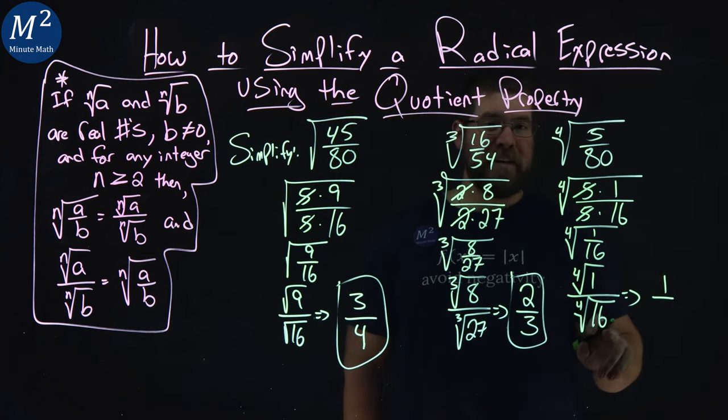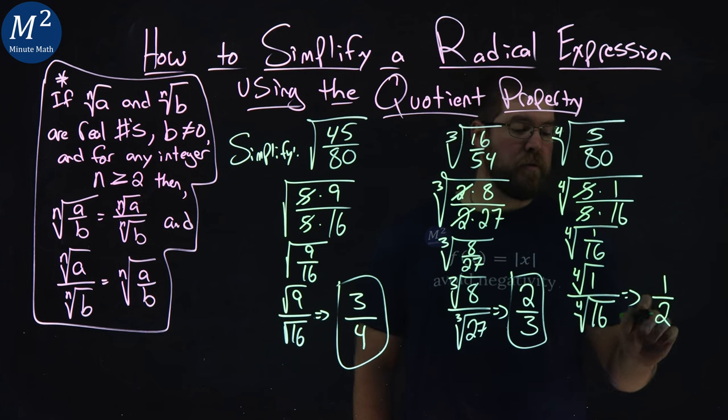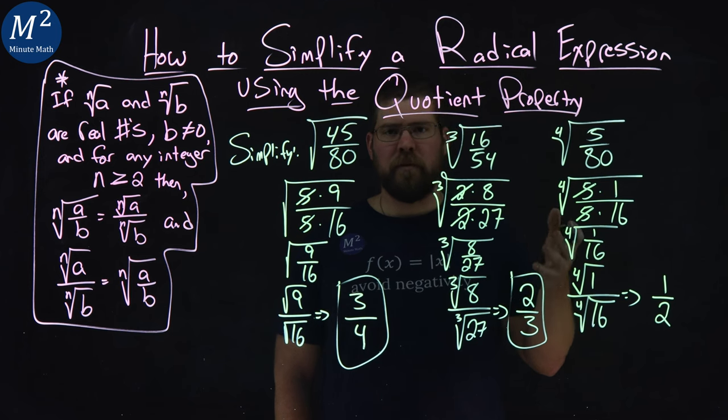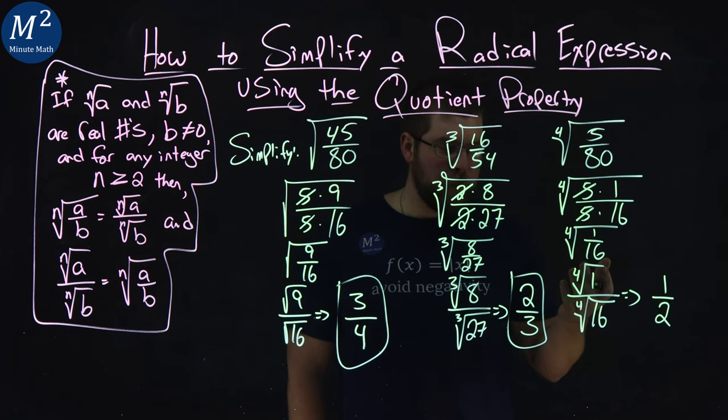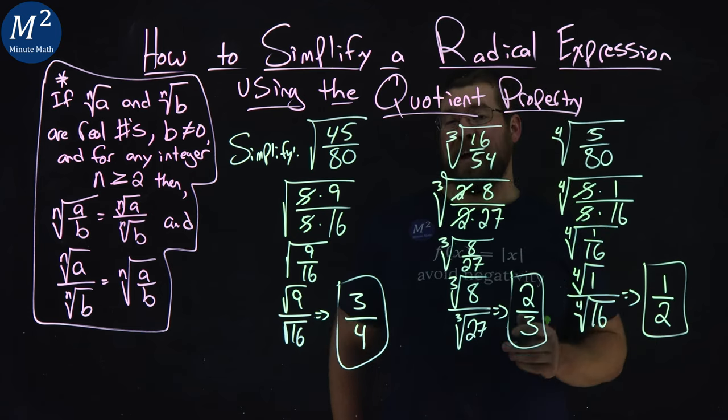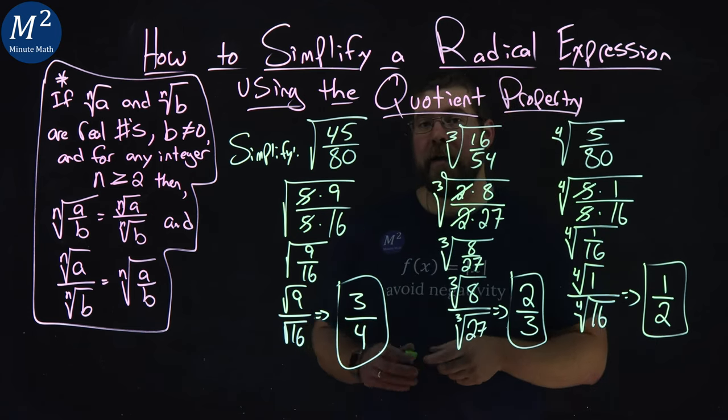And don't forget the fourth root of 1 is always going to be 1. Fourth root of 16 is actually 2. A lot of people forget about the 1 here and it's actually really nice to see. We take a fourth root, third root, square root of 1, and it's just 1. Either way, our final part here, the fourth root of 5 over 80, simplifies to be 1/2.